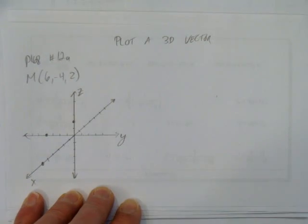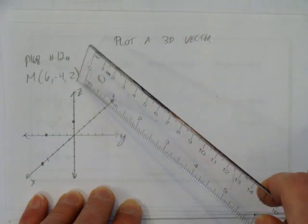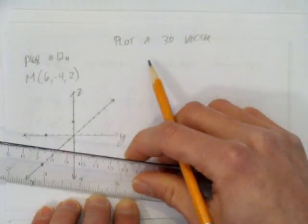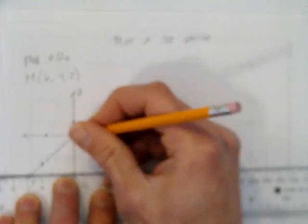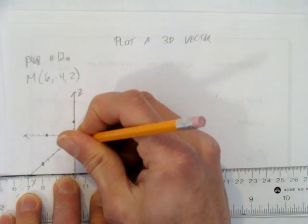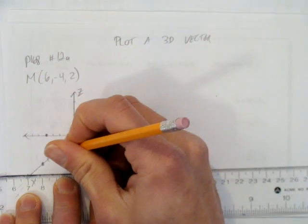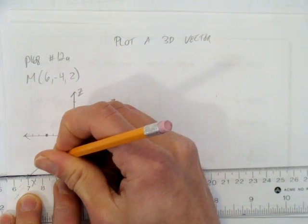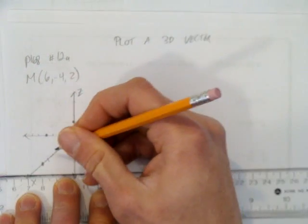We've got each of our components, or coordinates, of our vector on the axes. And now we're going to have to connect them. So, I'll put little ticks here, so we marched out 6 spaces on the x-axis.